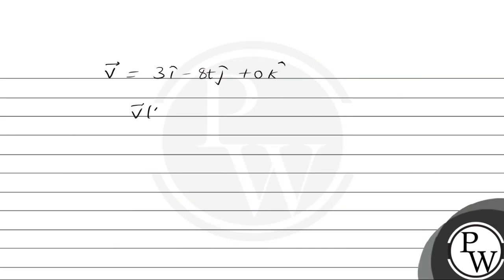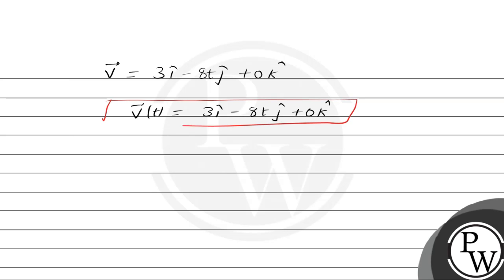Upon differentiating, we get the velocity vector as 3î minus 8t ĵ plus 0k̂, since the differentiation of constant 2 is 0. So the velocity vector as a function of time is 3î minus 8t ĵ. This is the answer to part a of this question.